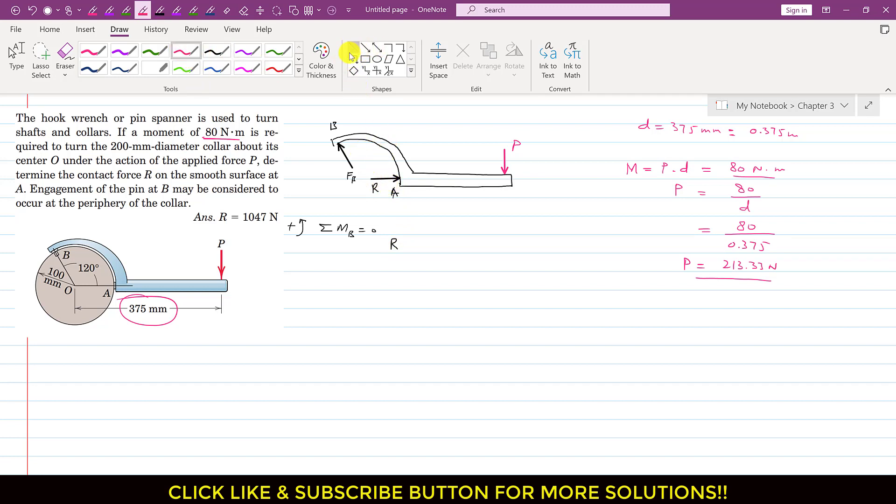So I will write R and the perpendicular distance of this R from point B is this distance. So this is the perpendicular distance of this R from point B. So we can find this. If this whole angle is 120 degrees and this is 90 degrees, so this angle is 30 degrees. So we can write that this is 30 degrees and the radius is 100mm. So this distance will be the cos component of 100mm. So we can write that this will be 100 cos of 30 degrees.